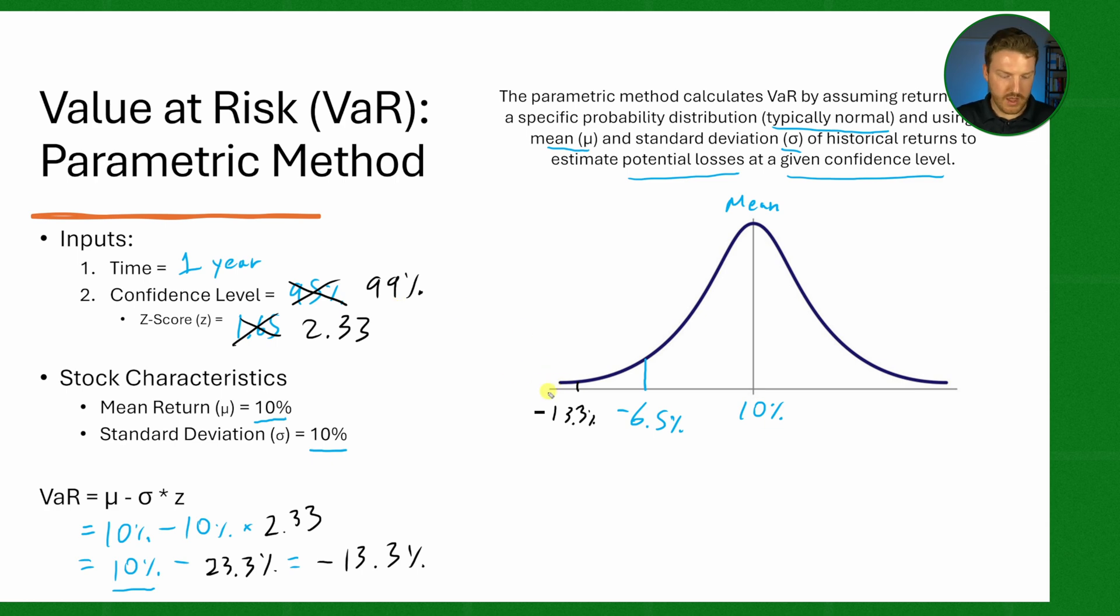And so now everything to the left of this would be just 1% of the returns, and then everything to the right of it would be 99% of the returns.